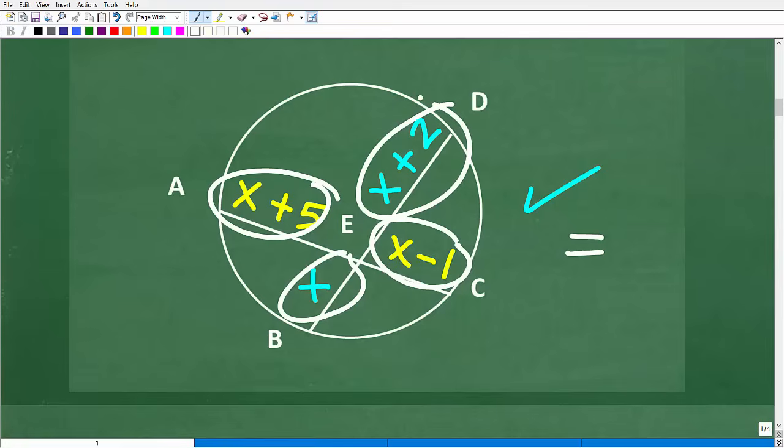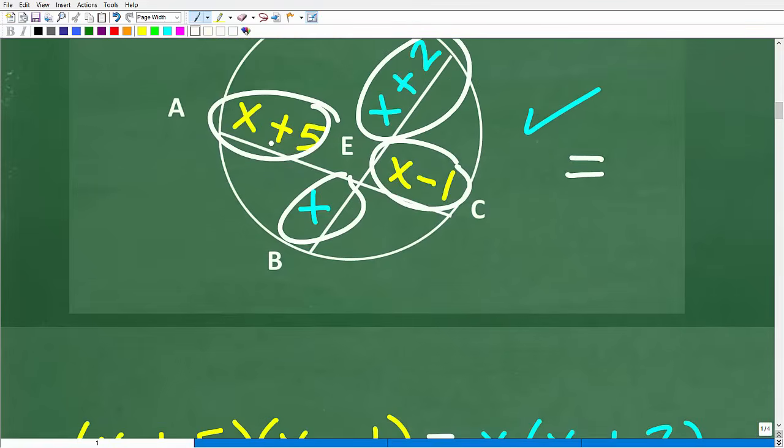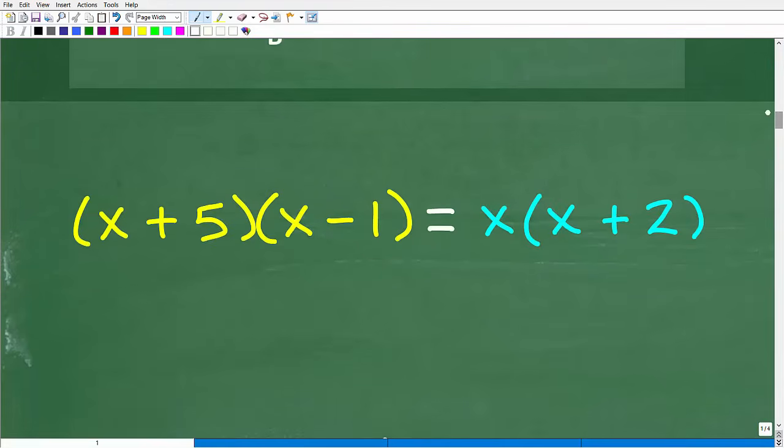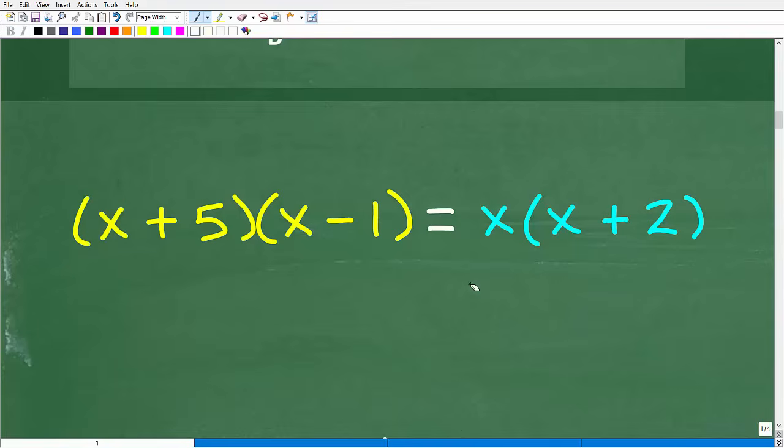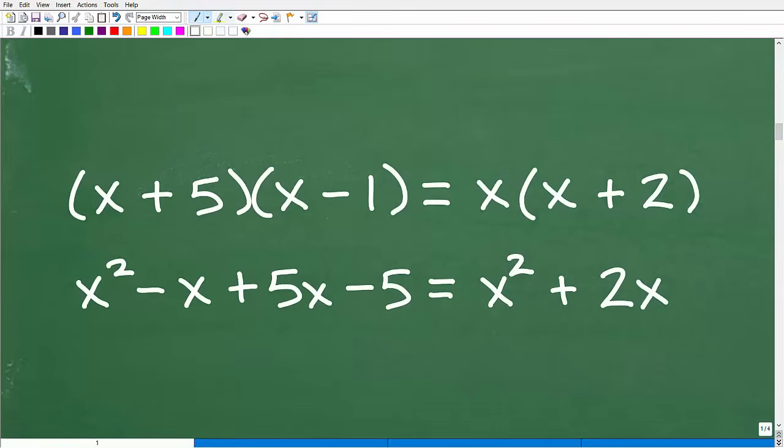So it's going to be this times this is going to be equal to this times this. That's what the formula says. If you remember it this way, this times this is equal to this times this, that's perfectly fine because that's what you need to solve this problem. So this times this, x plus five times x minus one, is going to be equal to x times x plus two. So now what we have is a lovely algebra equation to solve. We're shifting from geometry now into algebra.